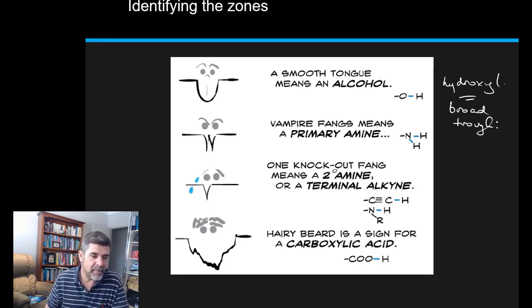The amine group are the little vampire fangs. So if you look at two sharp peaks as opposed to the broad peak or trough that we saw for the hydroxyl group, that's telling you about an amine.